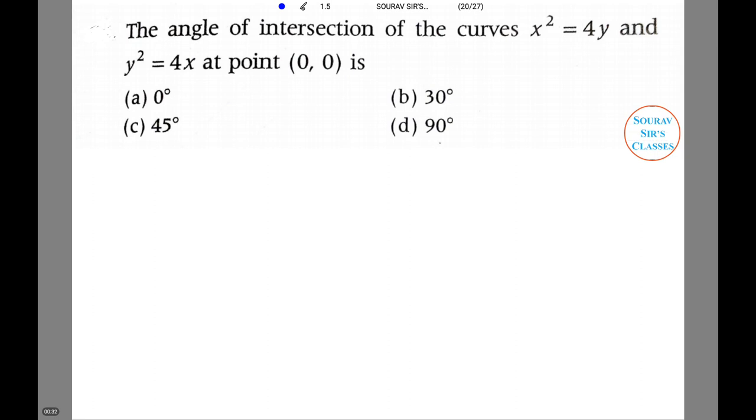Now in this particular question, they have asked us to find out the angle of intersection of the curves x²=4y and y²=4x at point (0,0), that means at the origin. We have four options and we have to pick the most appropriate one. Let's get started with the solution.